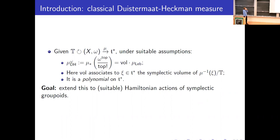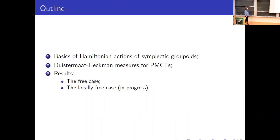The other key property is that this function is a polynomial on t-star. What I want to talk about today are my attempts to extend this to suitable Hamiltonian actions of symplectic groupoids. I will start by quickly writing down the definition of such a Hamiltonian action, then go into some detail on Duistermaat-Heckman measures in the context of PMCTs. PMCTs — Poisson manifolds of compact type — have many nice properties, including an analogous notion of the Duistermaat-Heckman measure, which is the starting point for extending this to Hamiltonian actions.